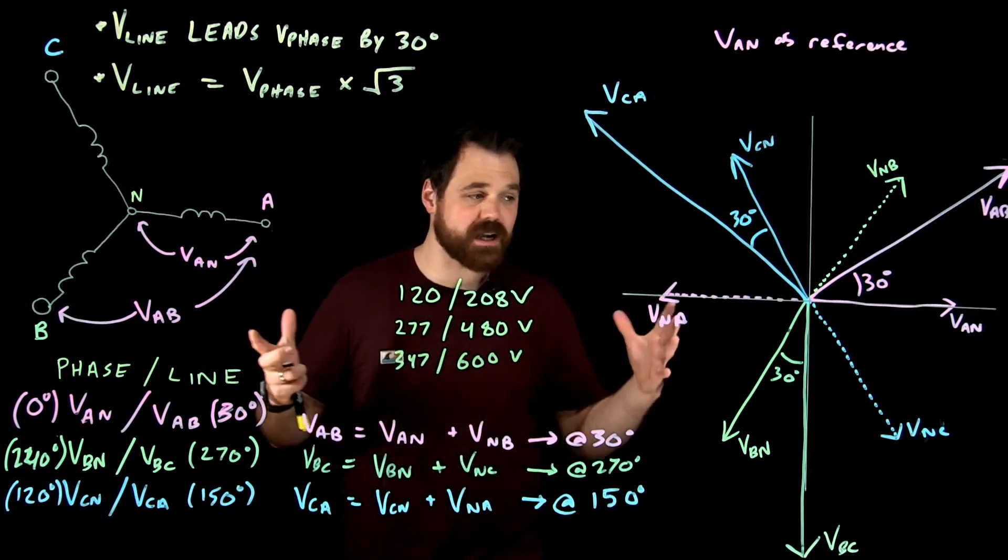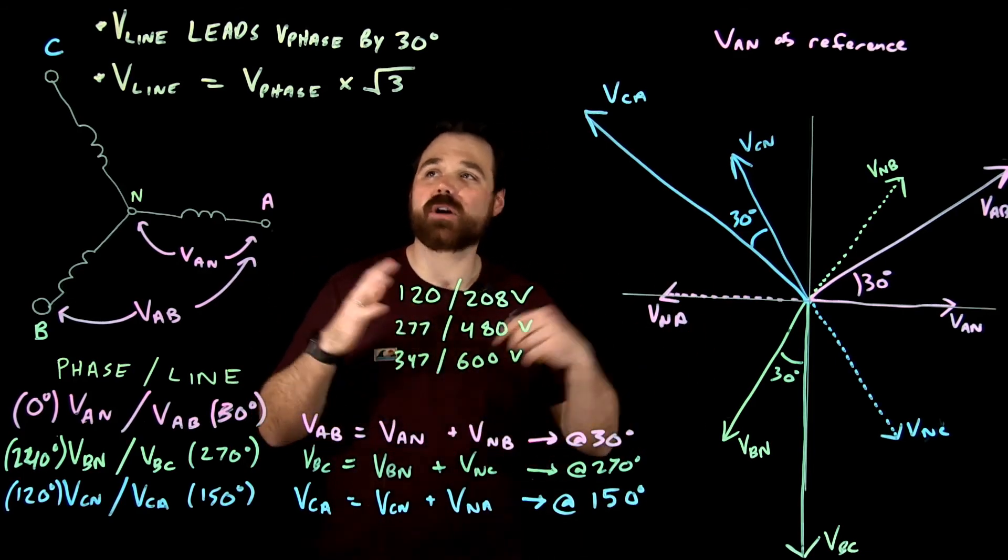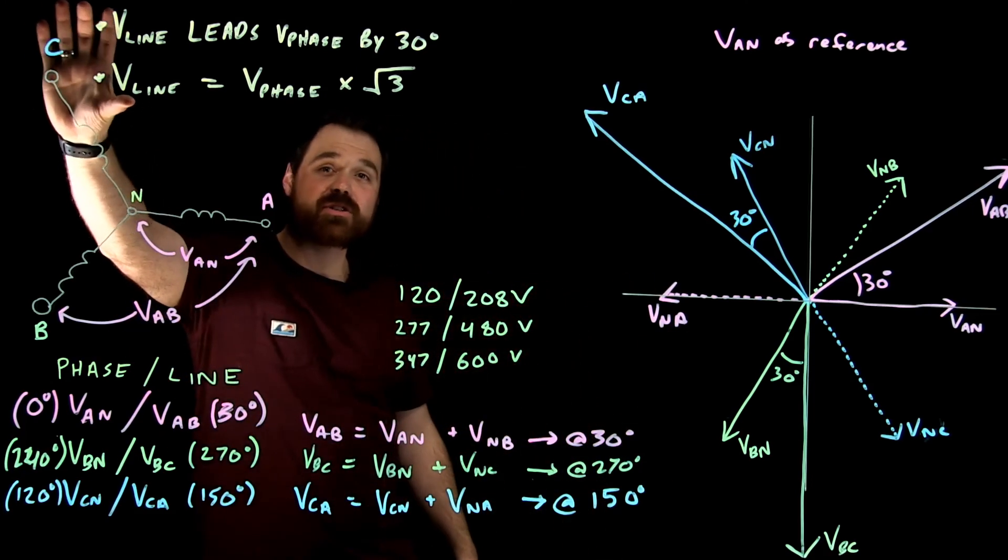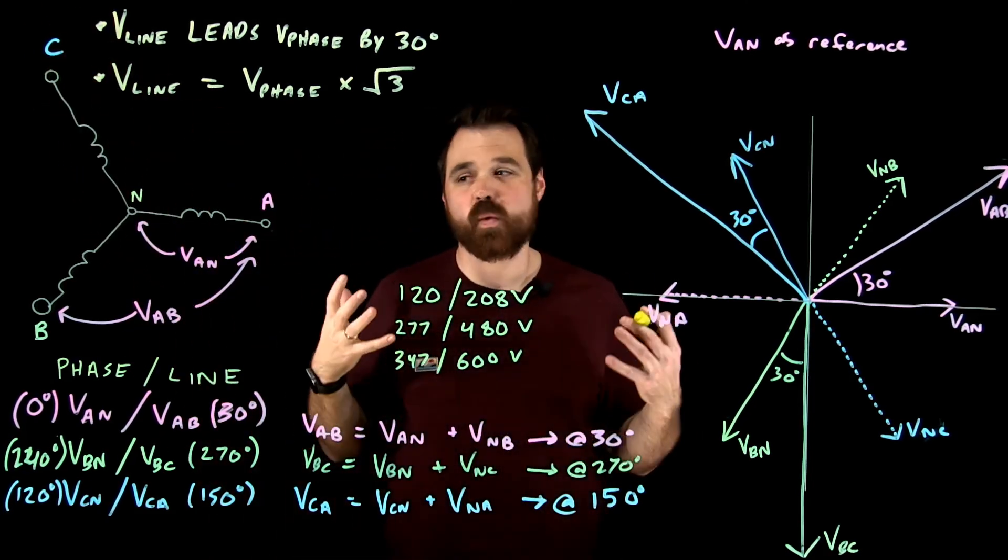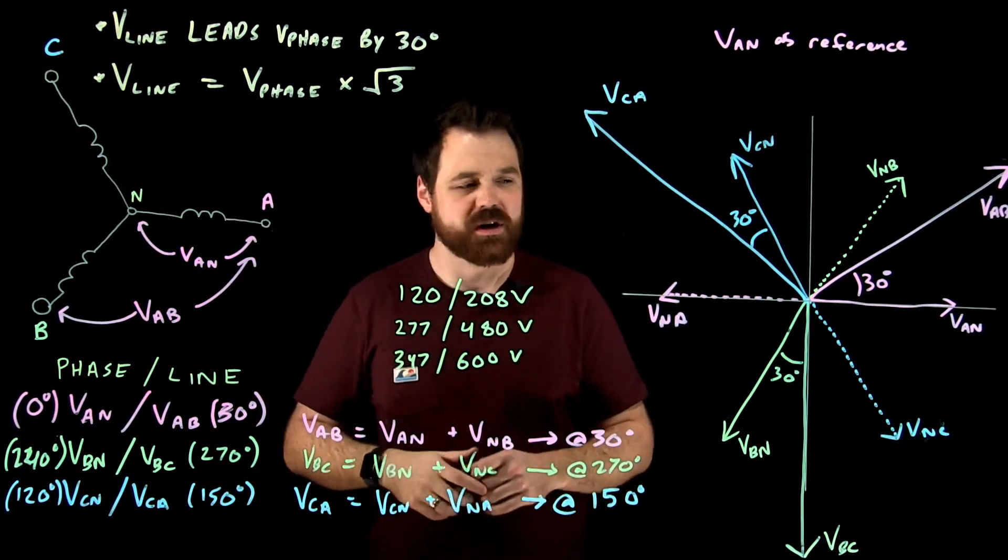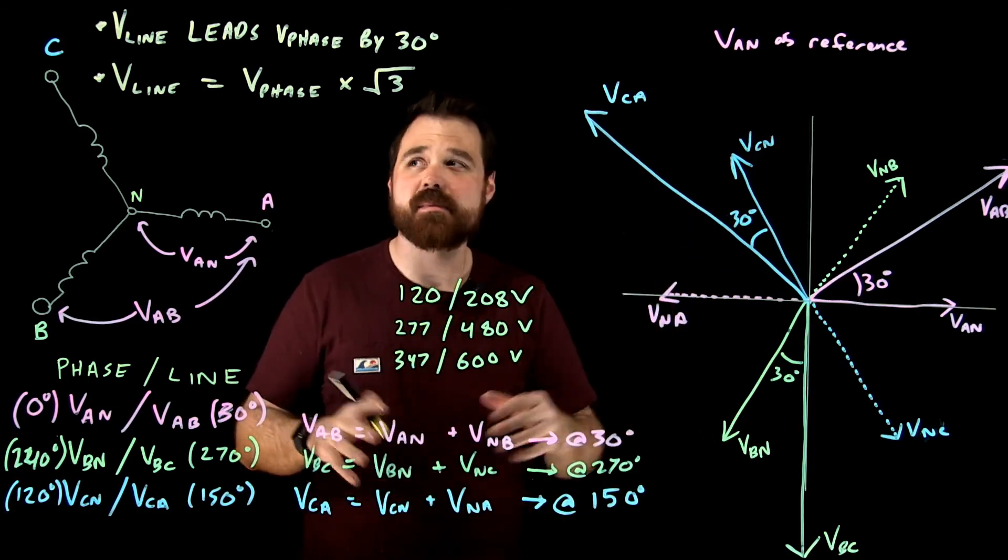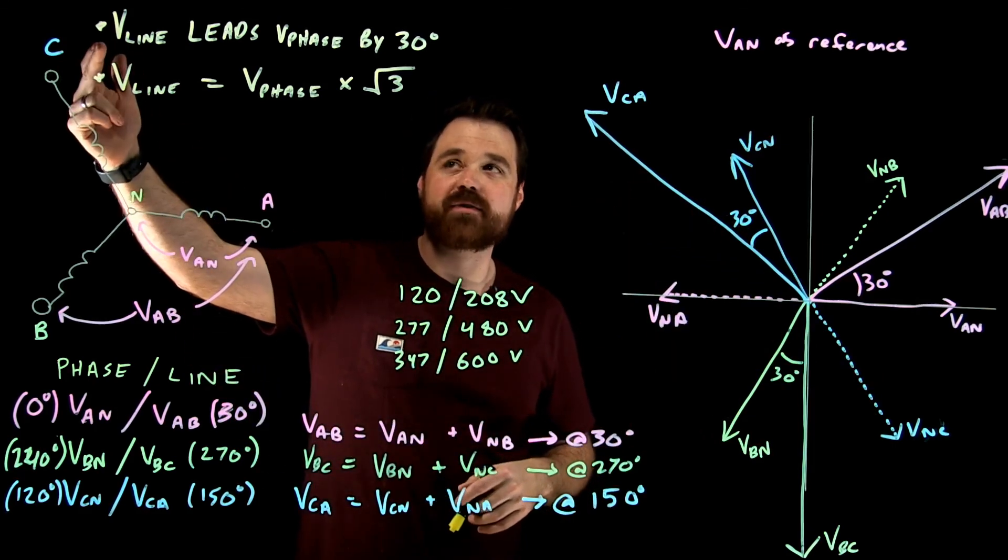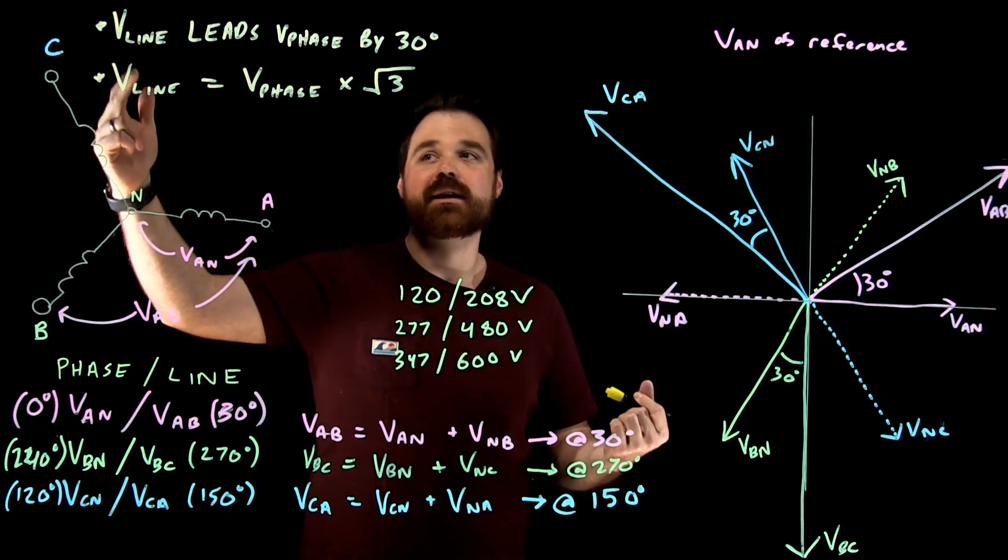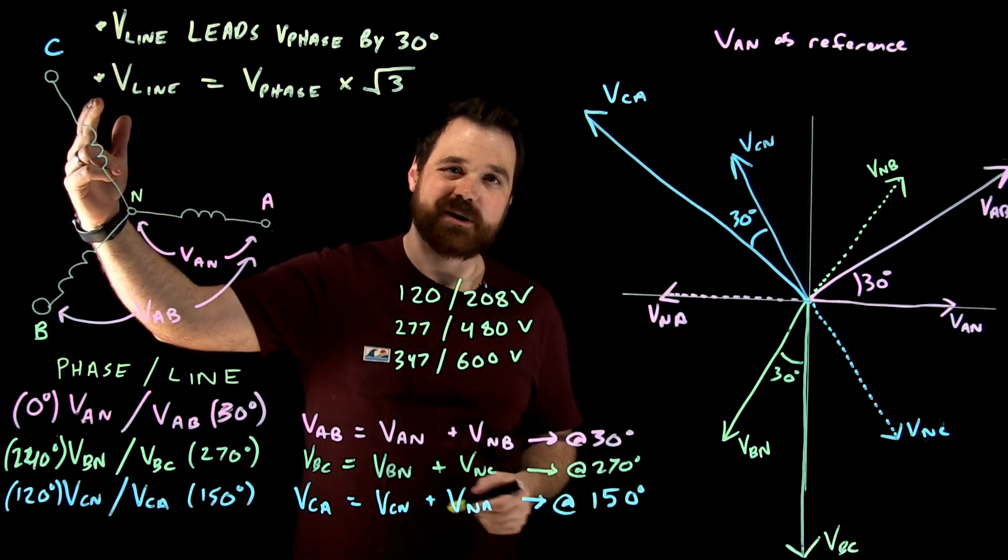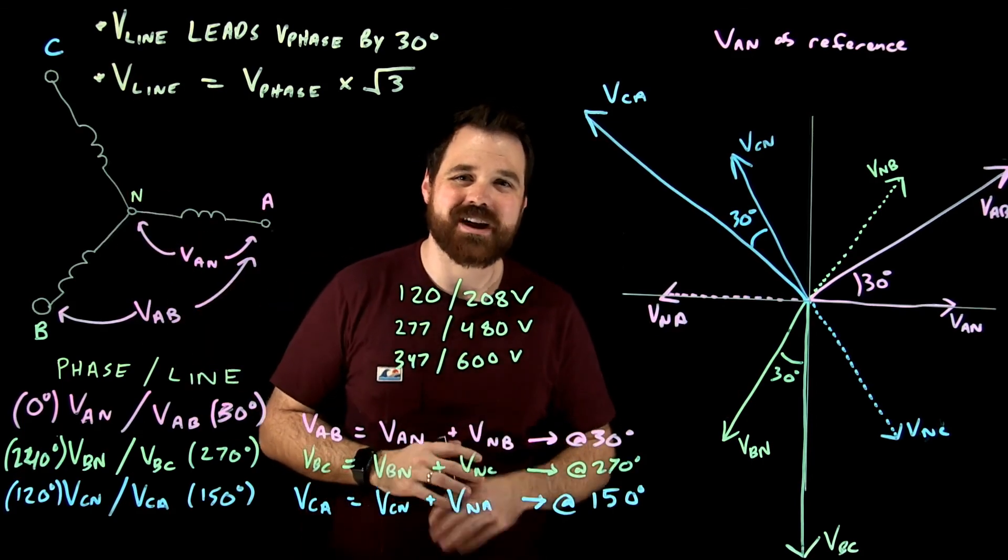So that's everything I wanted to cover in this video, lots of information real quick. The big thing, the big takeaway is just remembering these two main rules when we're talking about Y system voltages. We don't necessarily have to do all these phantom phasors and do all of this math every time, as long as you remember that the line voltage leads the phase voltage by 30 degrees and the line voltage equals the phase voltage times the square root of three. Thanks for watching, have a great day.